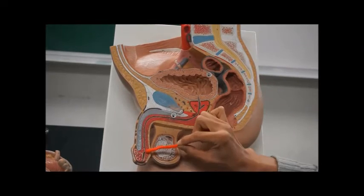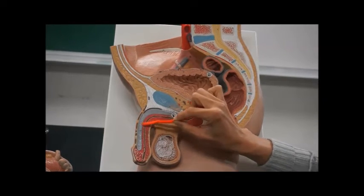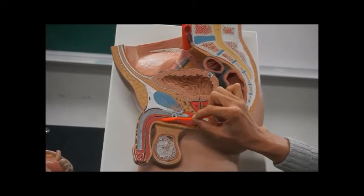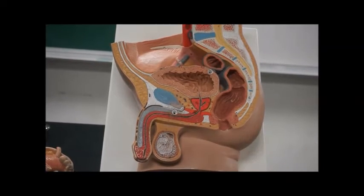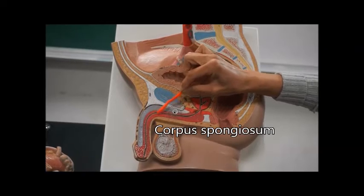So this part of the erectile tissue that surrounds or encompasses the urethra is referred to as the corpus spongiosum.